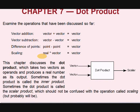Let us take the dot product now. Examine the operations. So far we all know vector addition, which means adding two vectors gives a vector. Vector subtraction: when you subtract a vector from another, what do you get? Vector. Good.